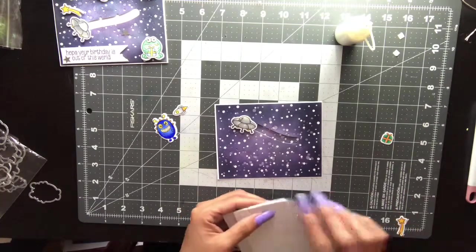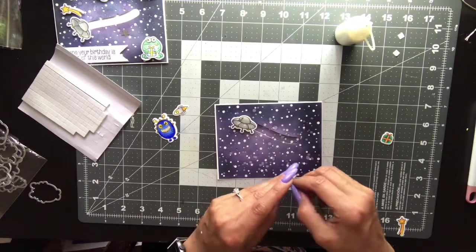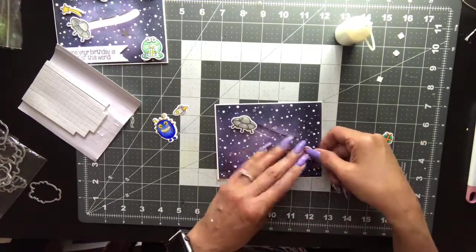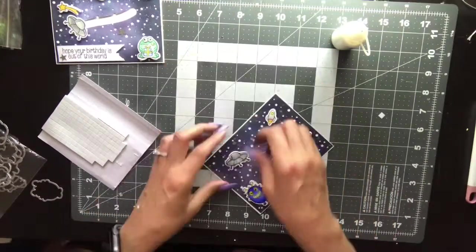Now I'm just going to add some foam pop-up dots behind all the other elements and I'm going to start laying that down, keeping in mind where I wanted my sentiment to be. On this card I wanted it to be on the bottom.